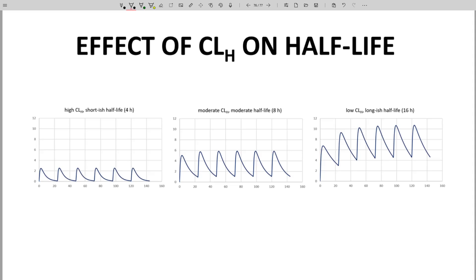The far-right curve reflects a half-life of 16 hours, which is about the upper limit for most oral drugs. This curve looks like a typical once-per-day oral drug curve. CP rises with each dose and drops between doses. Based on the low hepatic clearance for this molecule, the half-life is about 16 hours.